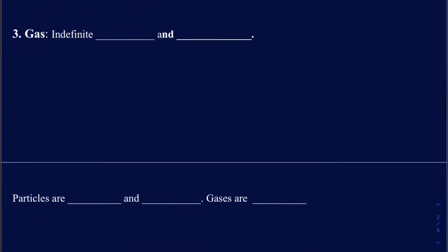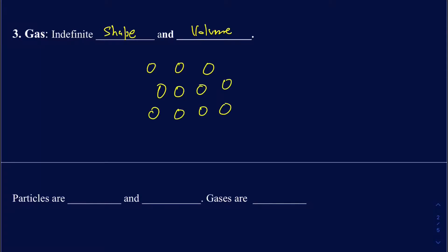Now let's talk about gases. Gases don't really have anything definite — they do not have a shape and they do not have a volume. The reason is that particles in gases are far away from one another. Since they are far apart, they are free to move around so they can take the shape of anything, and they can also come closer to one another if you apply pressure, which alters the volume.